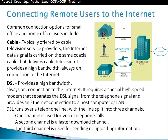The second method is DSL. If you have a phone line, you can have DSL — as long as you're not too far from the exchange. DSL uses the telephone line signal and is separated into three channels: one for voice telephone calls, one faster download channel, and one for uploading information.